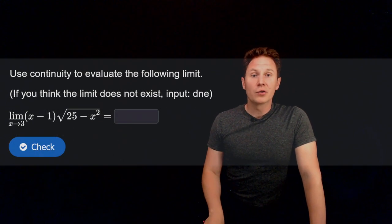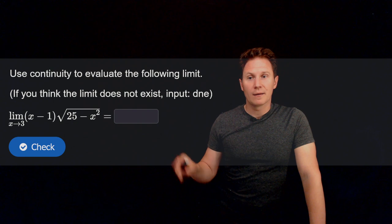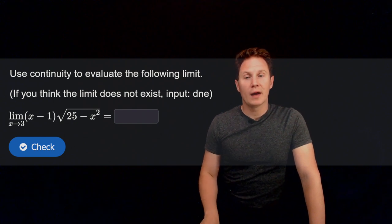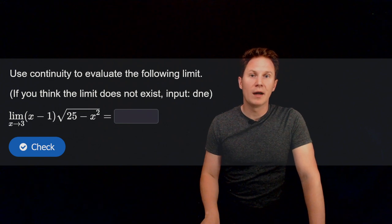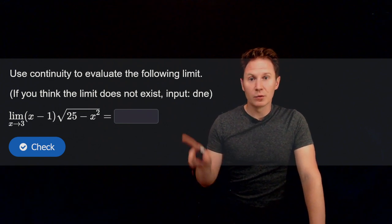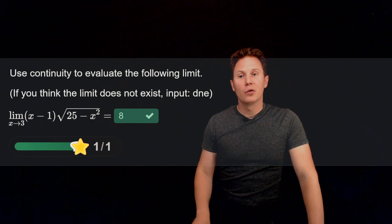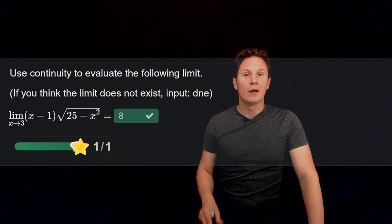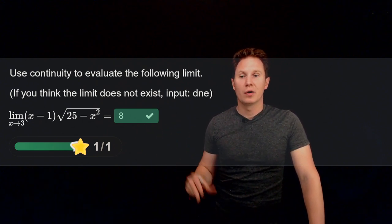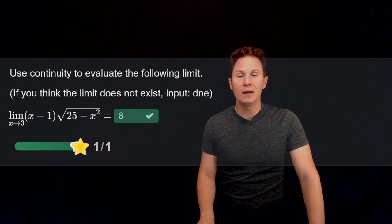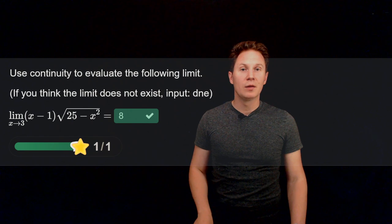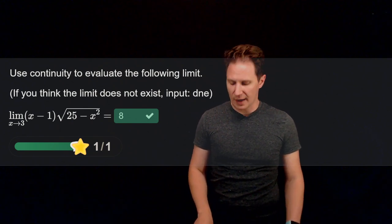Okay, use continuity to evaluate the following limit: x approaches 3 of x minus 1 multiplied by the square root of 25 minus x squared. Pause the video and input your answer in the box. Okay, I hope you paused it and have inputted 8. So this is an elementary function whose domain includes, has the number 3 in it, so we can evaluate the limit by direct substitution to get 2 times 4 equals 8.